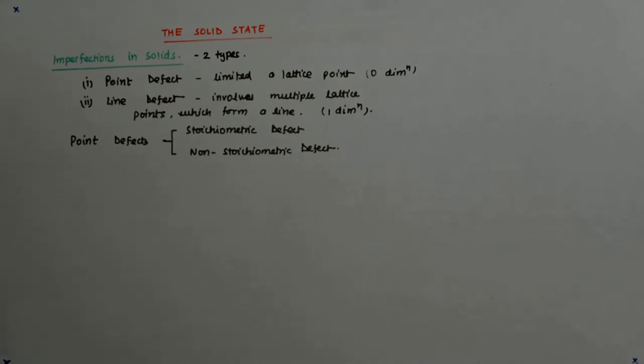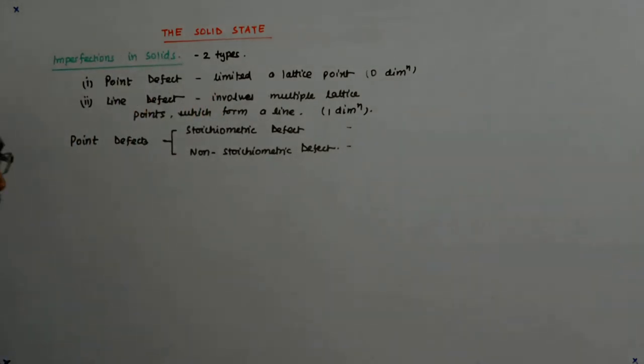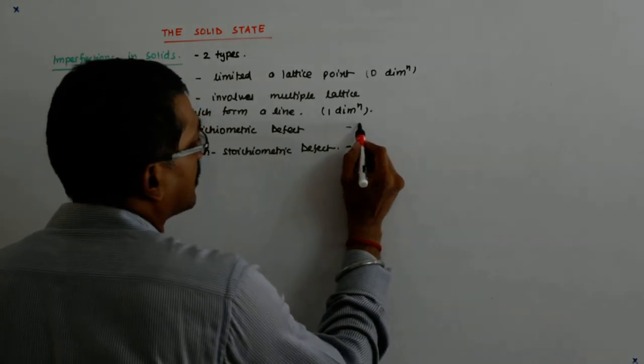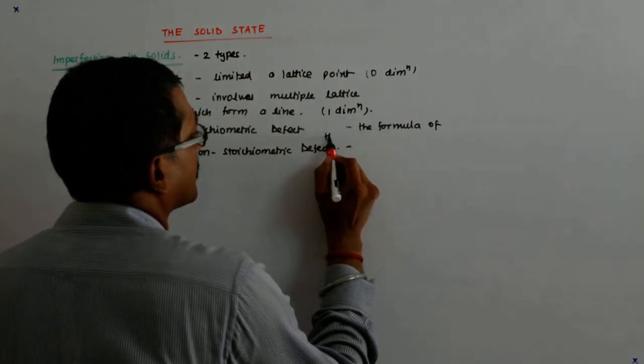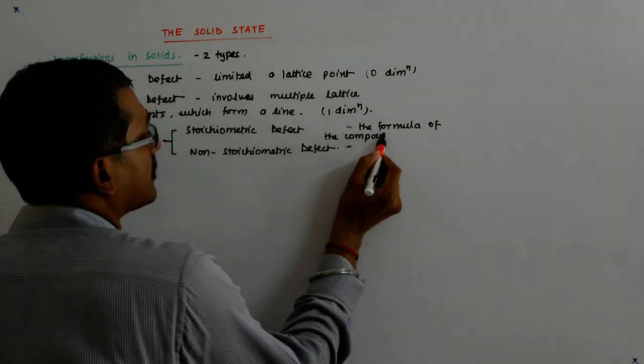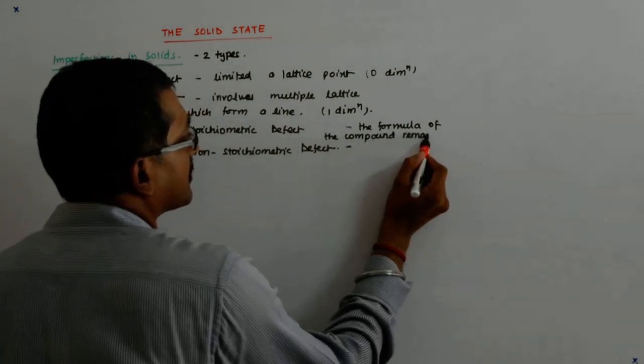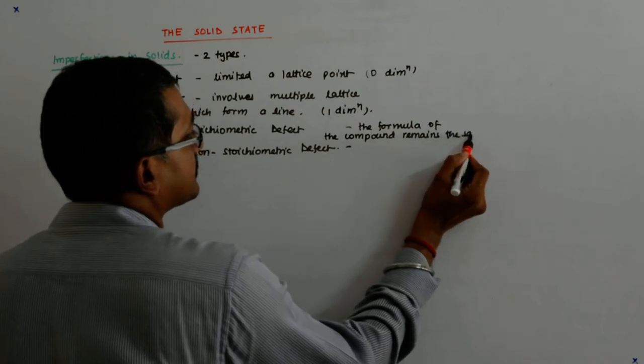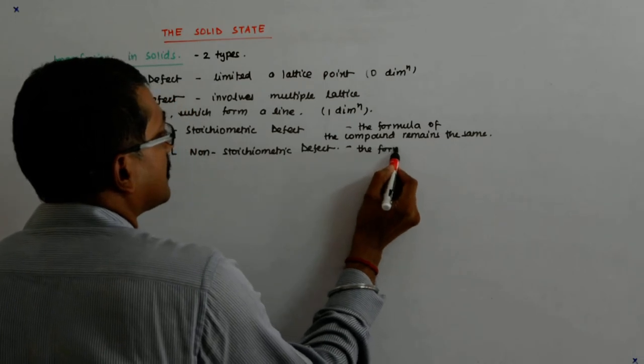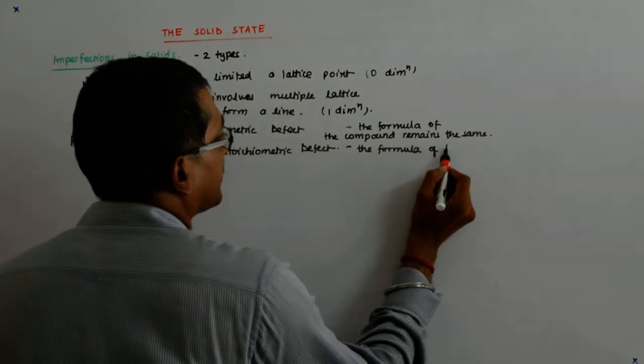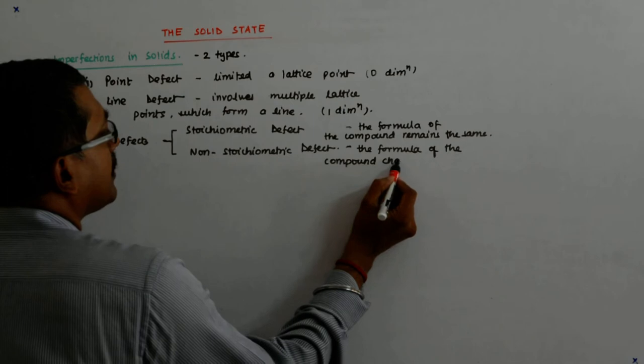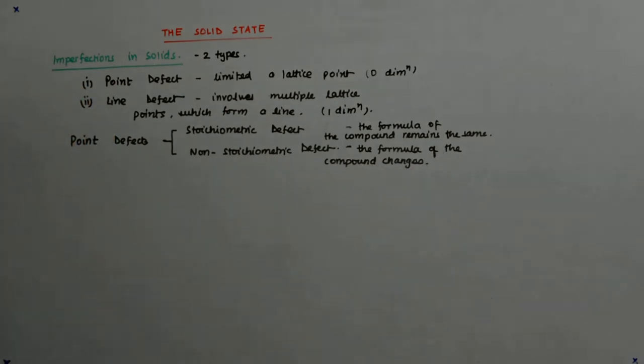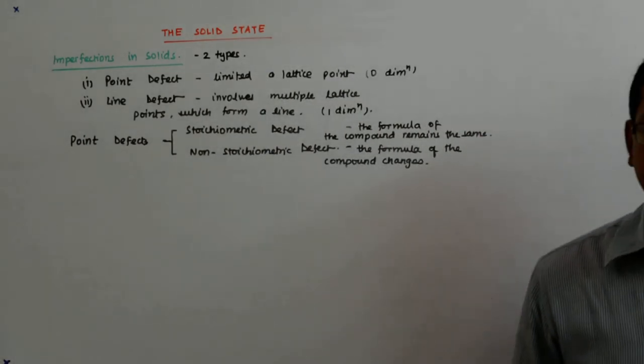What do you mean by stoichiometric defect? The formula of the compound remains the same. What we actually mean is that the ratio, the proportion of the different molecules, they remain the same here.